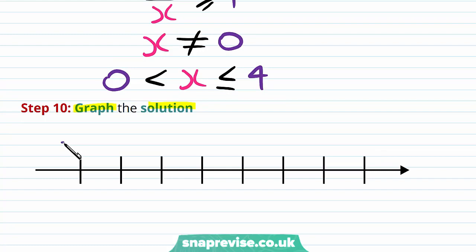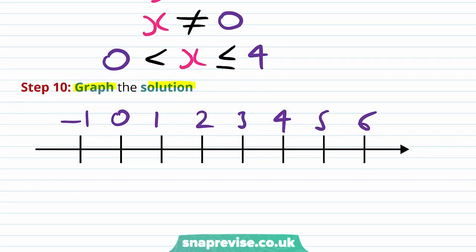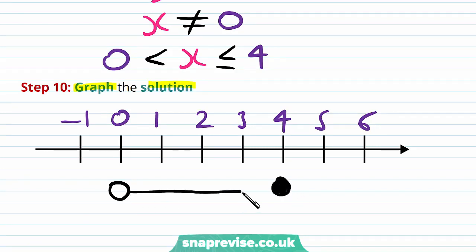Our last step is to graph the solution. We draw points -1, 0, 1, 2, 3, 4, 5, 6 on the number line. We place an open circle at 0 (strict inequality) and a filled circle at 4, with a line between them. This is our graph of the solution.